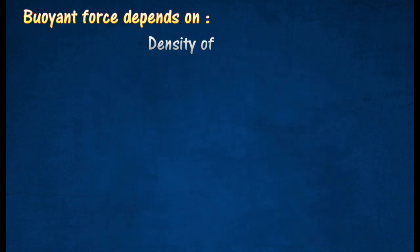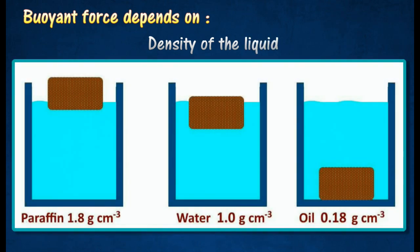The higher the density of liquid, the larger the buoyant force. The diagram shows a cuboid submerged at different depths in liquids of different densities.